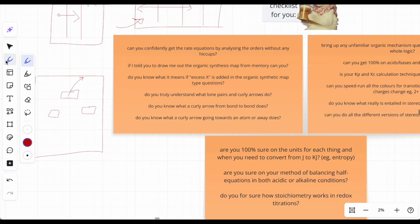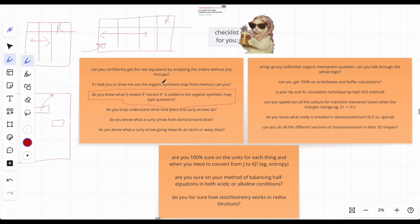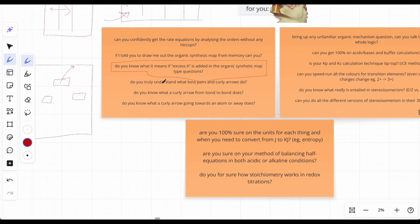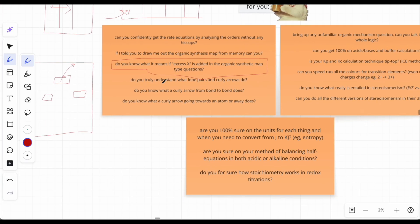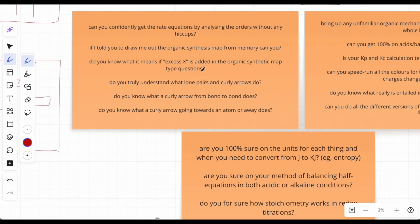Do you know what it means if excess reagent is added to organic synthesis map questions? I'm not going to tell you that answer - when you figure it out, write in the comment section. I really want this checklist to be something you spend hours on, taking chemistry into your own hands. Next: do you truly understand what lone pairs and curly arrows do, can you define them, and do you know what they mean going in certain directions? Very niche: do you know what a curly arrow from bond to bond does?